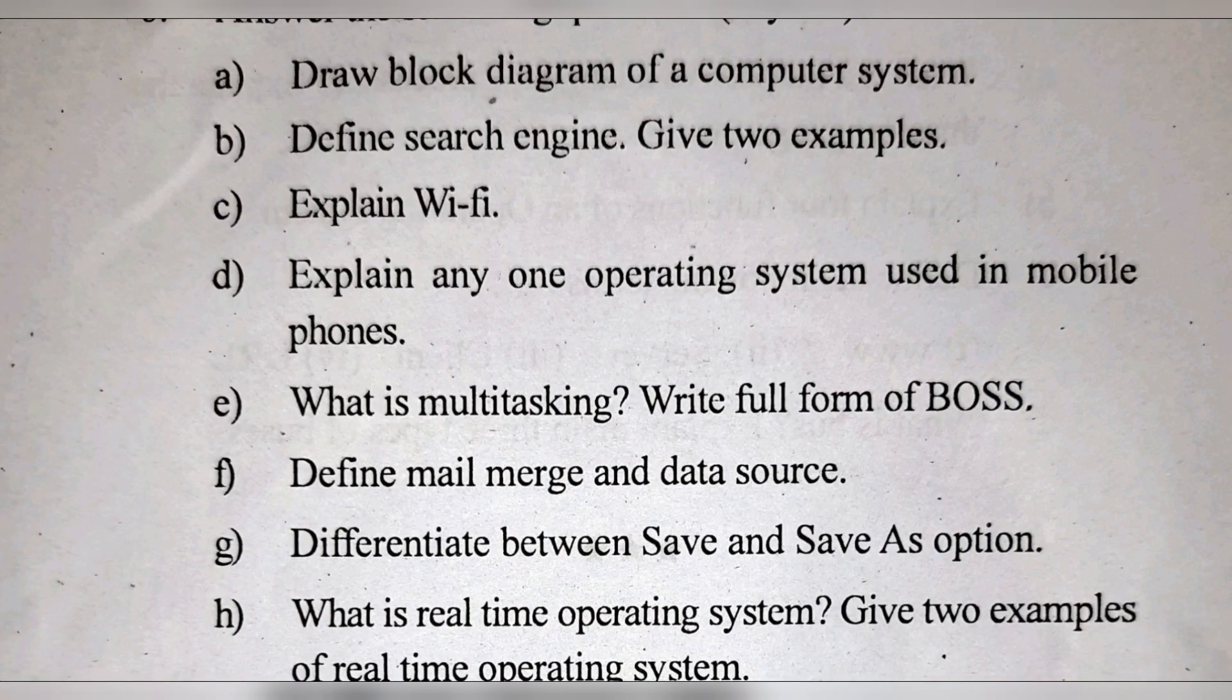Explain Wi-Fi - I have already discussed in previous videos. Explain one operating system used in mobile phones - you can explain either about Android or iOS. What is multitasking? Write the full form of BOSS. BOSS full form is Bharat Operating System Solution. Multitasking means when we can do multiple work or tasks simultaneously in our computer system.